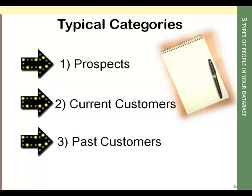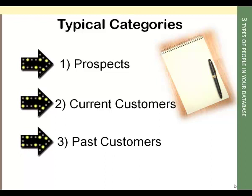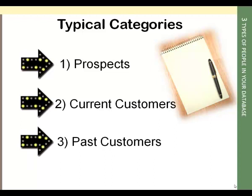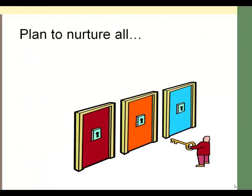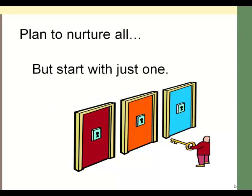The third category is past customers. It's kind of up to you to decide what a past customer is — is it someone who hasn't purchased from you in the last month, in the last three months, in the last year? You really do want to have a plan to nurture every single one of them, but it's probably easiest to just pick one category and start a nurture program for them.